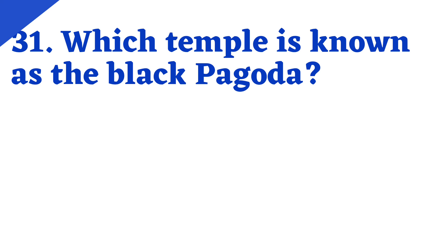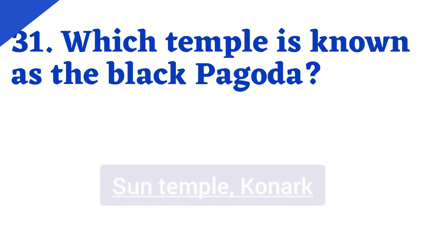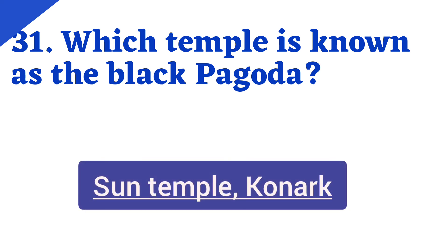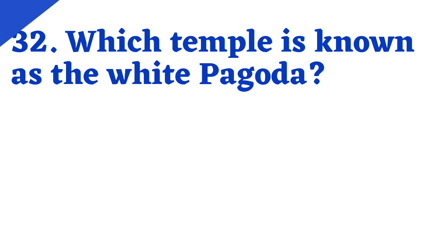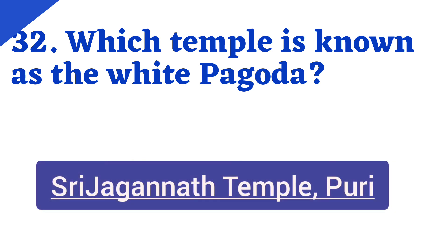Which temple is known as the Black Pagoda? Answer is Sun Temple, Konark. Which temple is known as the White Pagoda? Answer is Sri Jagannath Temple, Puri.